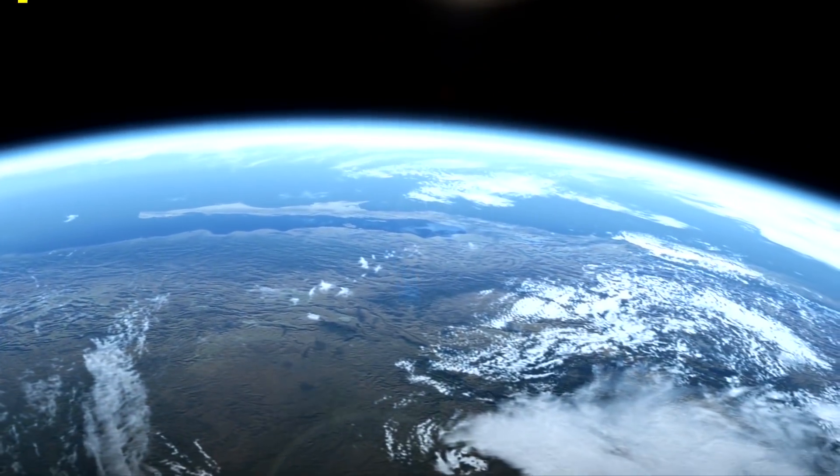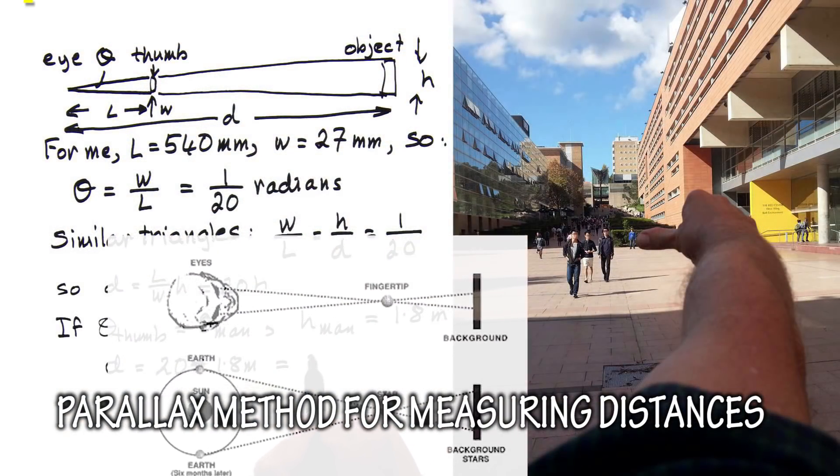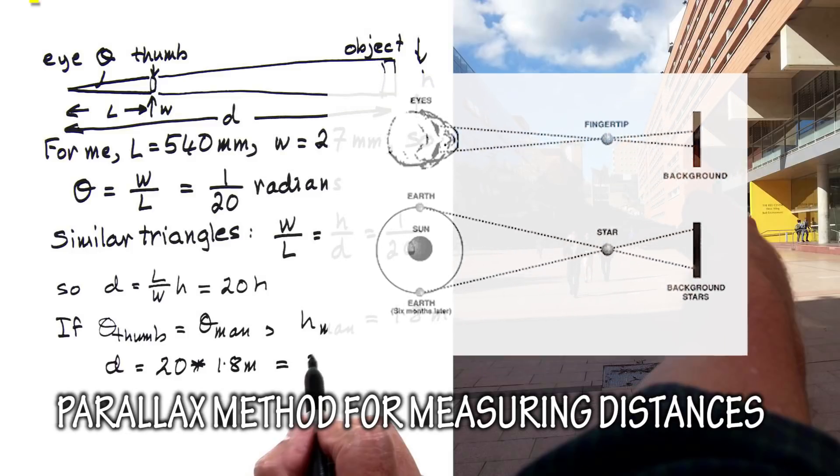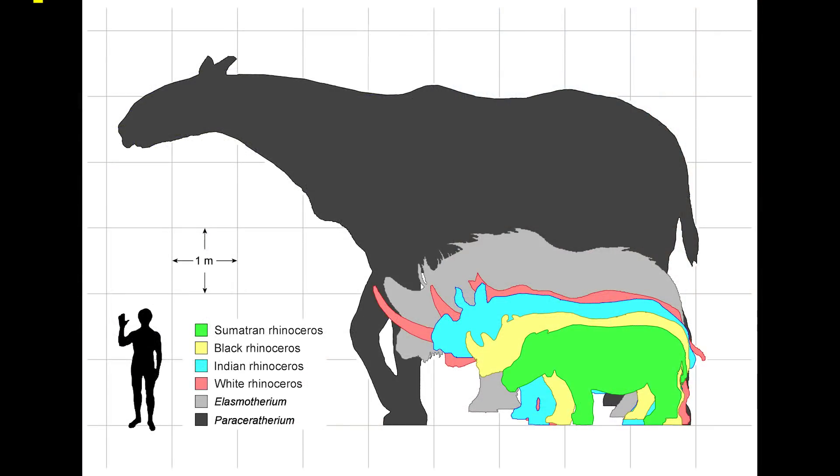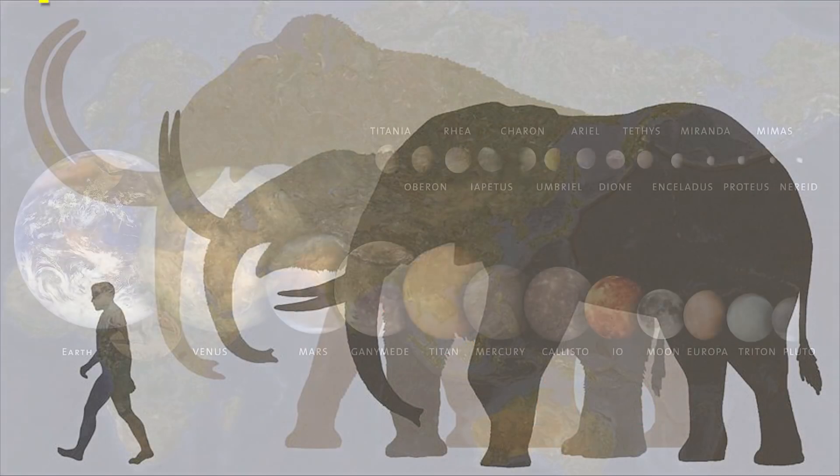The size and scale of the universe is one of those things that us humans have trouble visualizing. We often compare familiar sizes to each other with images like these. We can use this method for planets, stars and galaxies, but what about the space in between?